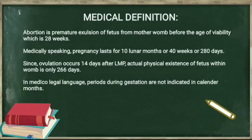Here is the medical definition of abortion: abortion is a premature expulsion of fetus from mother's womb before the age of viability, which is 28 weeks. Medically speaking, pregnancy lasts for 10 lunar months, or 40 weeks, or 280 days. Since ovulation occurs 14 days after LMP, the actual physical existence of the fetus within the womb is only 266 days, not 280 days. In medico-legal language, periods during gestation are not indicated in calendar months.